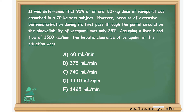In this question, it was determined that 95% of an oral dose of verapamil was absorbed in a 70 kg test subject. However, because of the extensive biotransformation during its first pass through the portal circulation, the bioavailability of verapamil was only 25%.